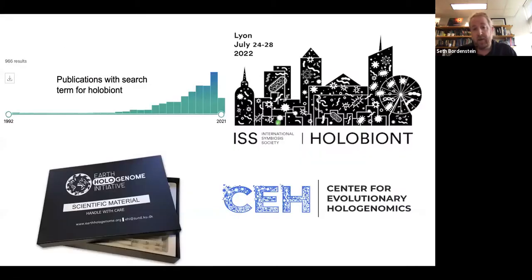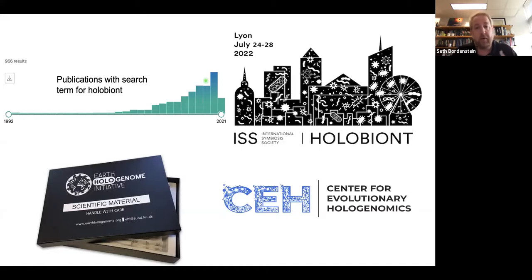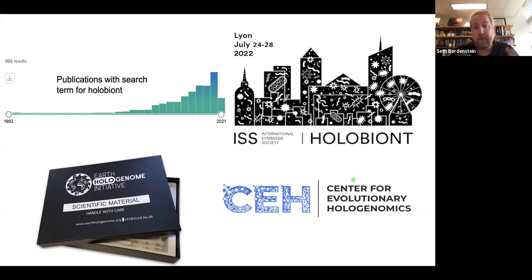These terms have an original use dating to 1991, with citation indexes using them from 1992, and exponential growth in the recent decade due to microbiome sciences. There are now conferences tied between the Symbiosis Society and Holobiont theme, Earth Hologenome Initiatives, and a Center for Evolutionary Hologenomics. The most useful way of thinking about them is as structural terms — just as we have a holoenzyme to define an enzyme and its metal cofactors, we have a holobiont, which is the host in its microbial community, and the hologenome as their collective genomes.